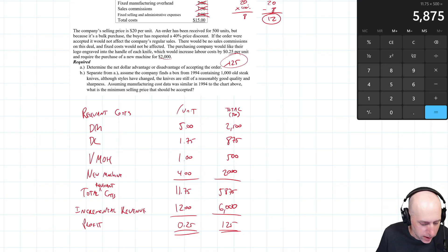Separate from A. Assume the company finds a box from 1994 containing a thousand old steak knives. Although styles have changed, the knives are still of reasonably good quality and sharpness. Assuming manufacturing cost that was similar in 1994 to the chart above, what's the minimum selling price that should be accepted? Okay, so you find this old dusty box of knives. You look and you go, well, actually, they're all in good shape here.